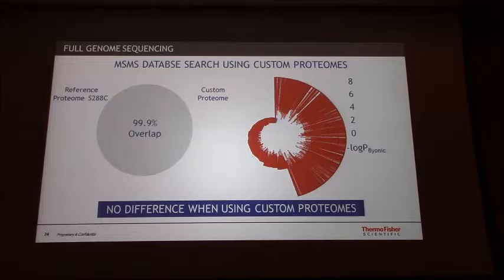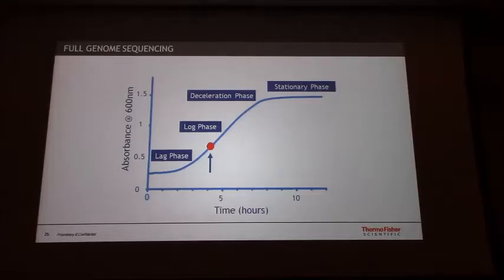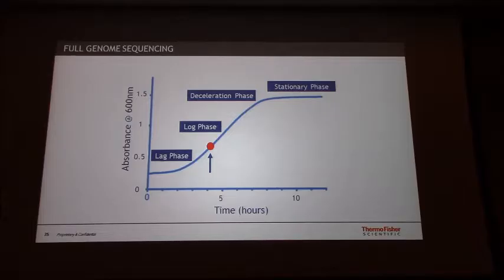That was somewhat disappointing. But I think one of the reasons is that the OD was 0.7 — very early in the log phase — so there is very little variability within the strains. Also, we don't expect all proteins to be expressed, and of course we did only a one-hour run, so we also don't expect to have high proteome coverage. It was very difficult for us to see great coverage of all the proteins.